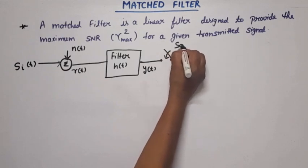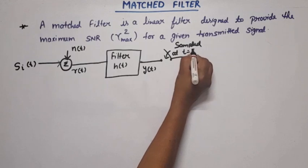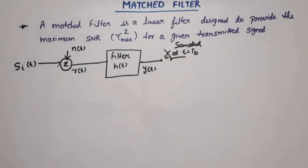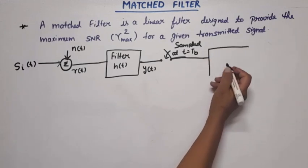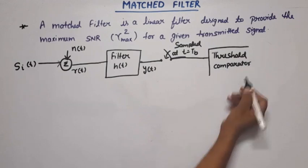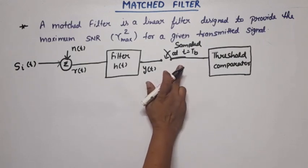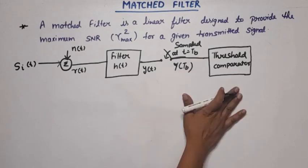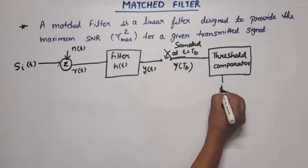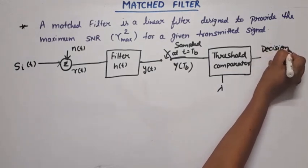The output y(t) of this filter is applied to a sampler. The sampler will sample at t = T_b, i.e., at the bit duration. The output of the sampler is then passed to a decision device, or we can say a threshold comparator. This threshold comparator will compare two inputs: one input is the output of the sampler, which is y(T_b), and it will be compared with a threshold value — let this threshold value be lambda.